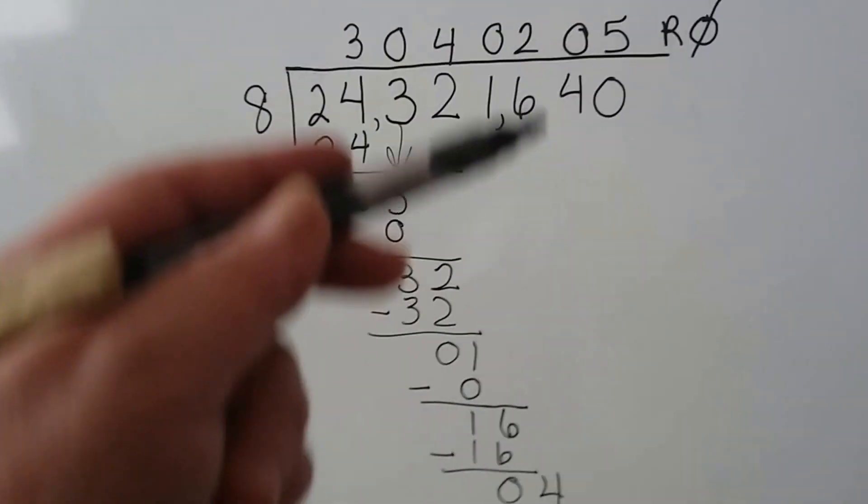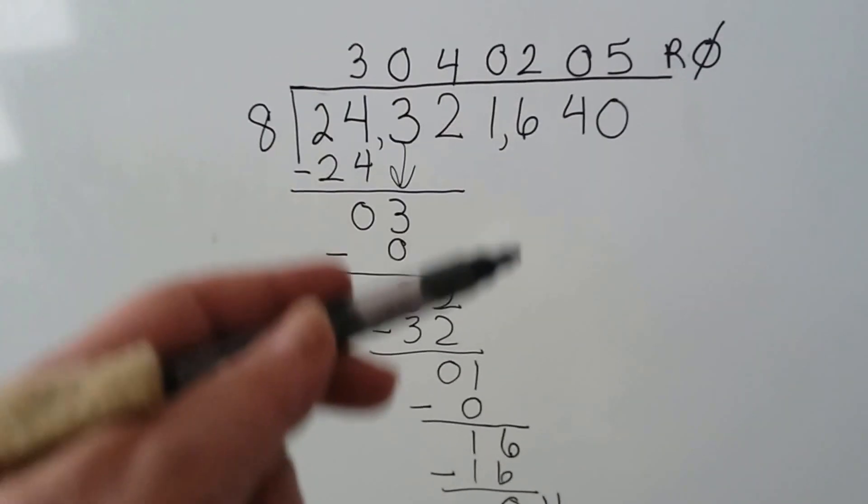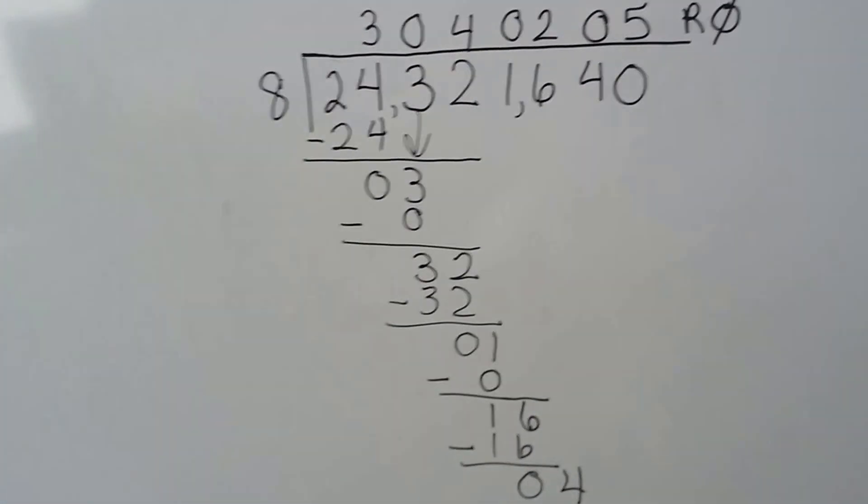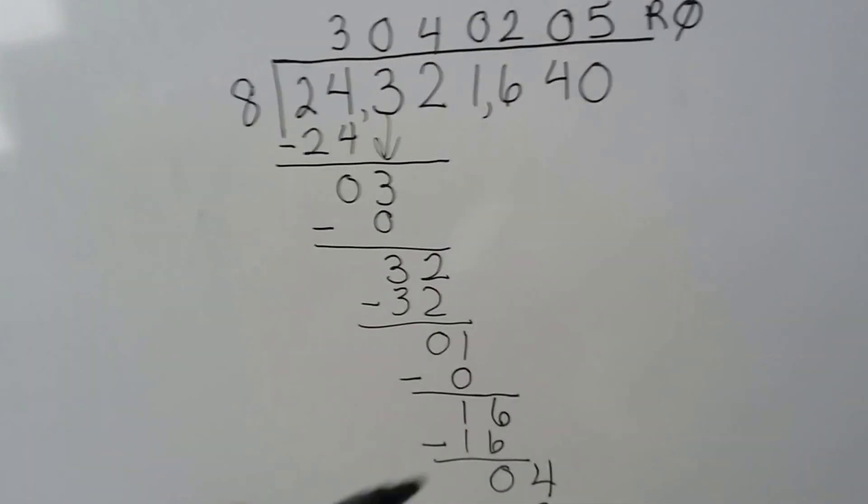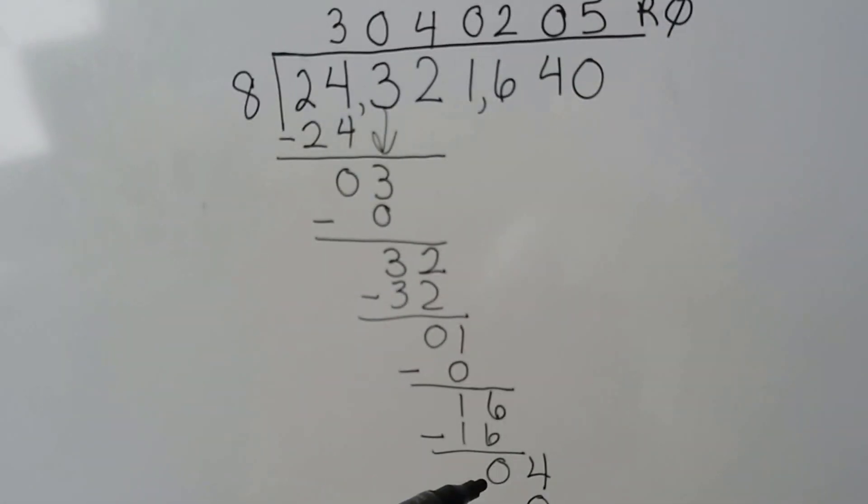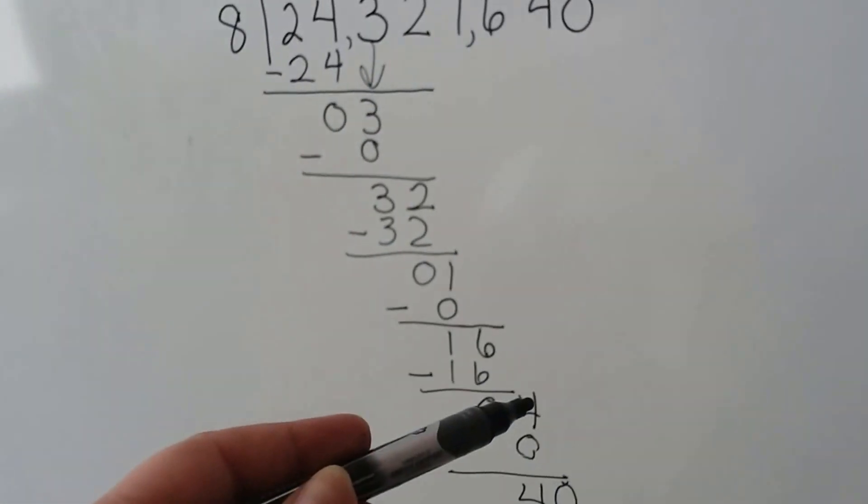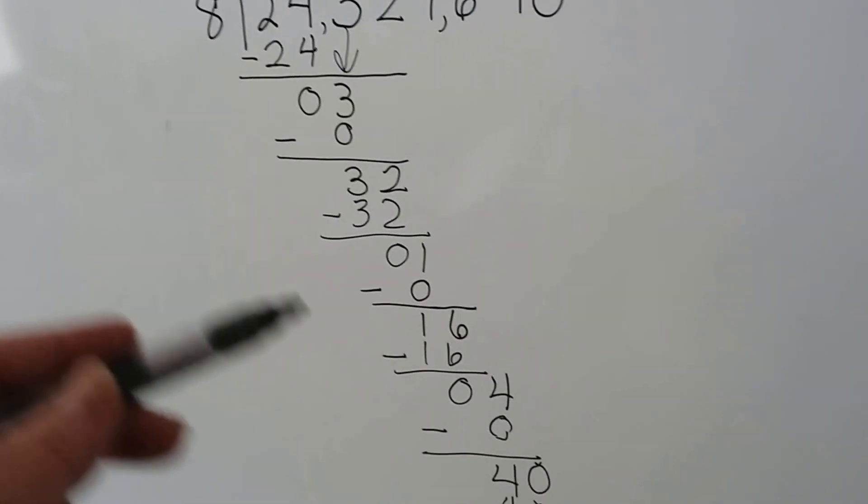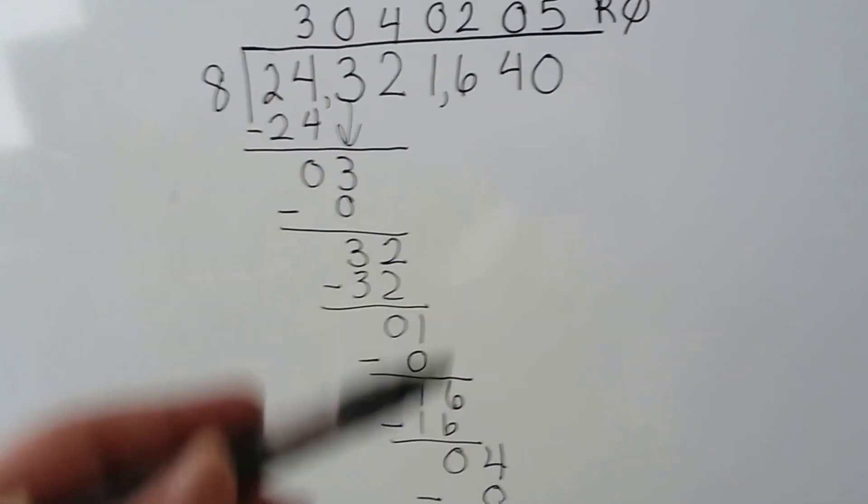Eight goes into 16 two times, and because we drop down the six here, that's where the two goes. And eight times two is 16. We do our subtraction, and we get a zero again. Now it's the four's turn to come down. How many times can eight fit into four? Zero times.